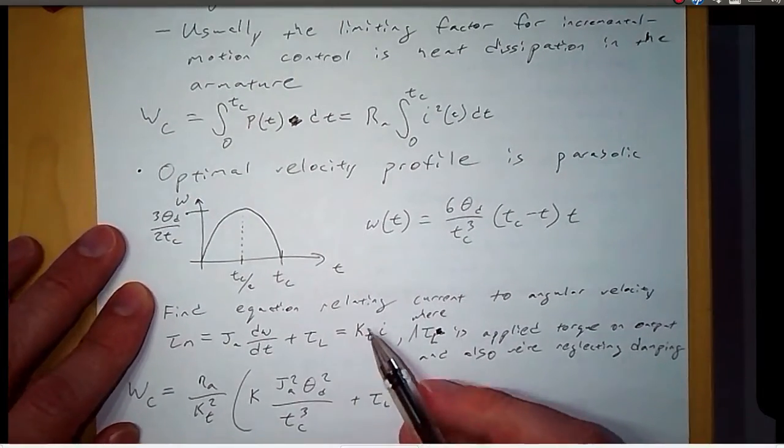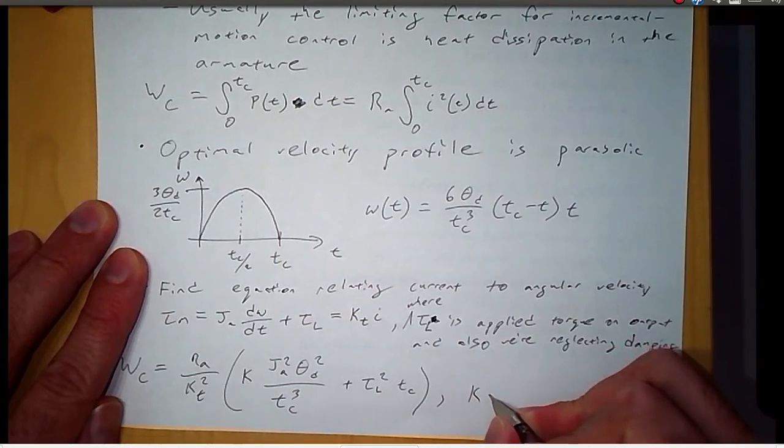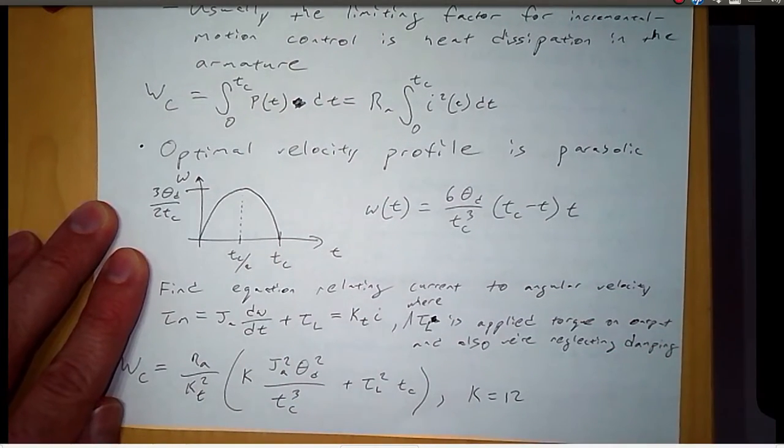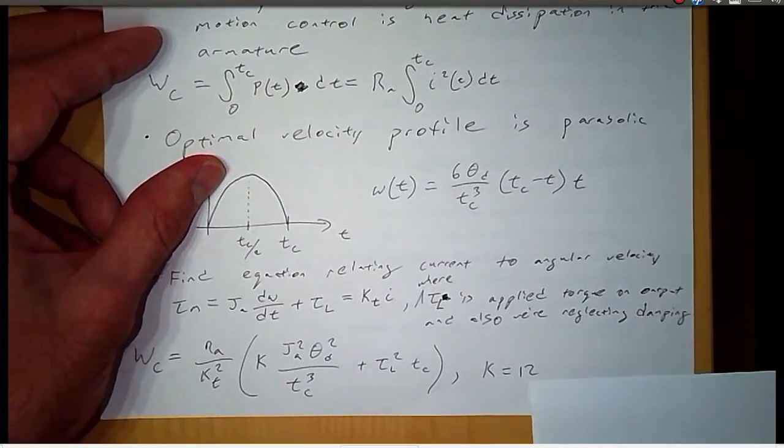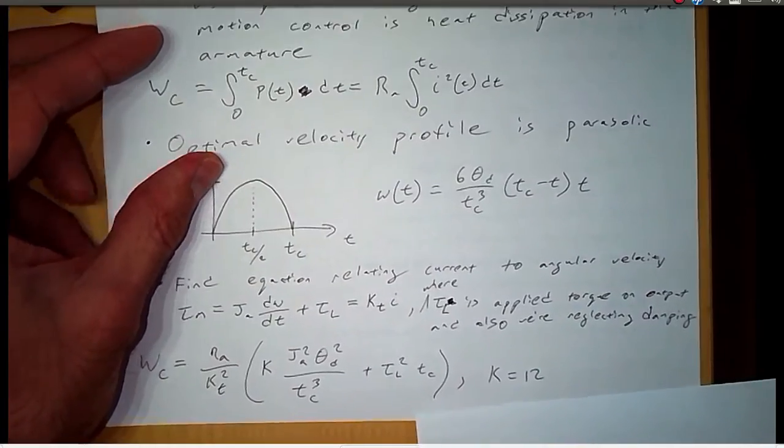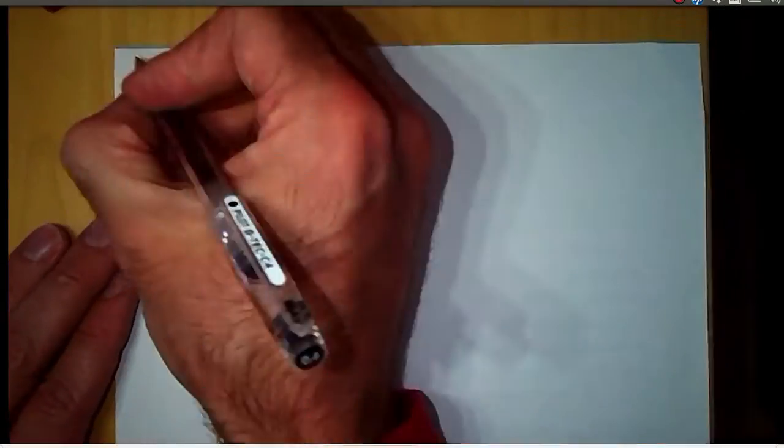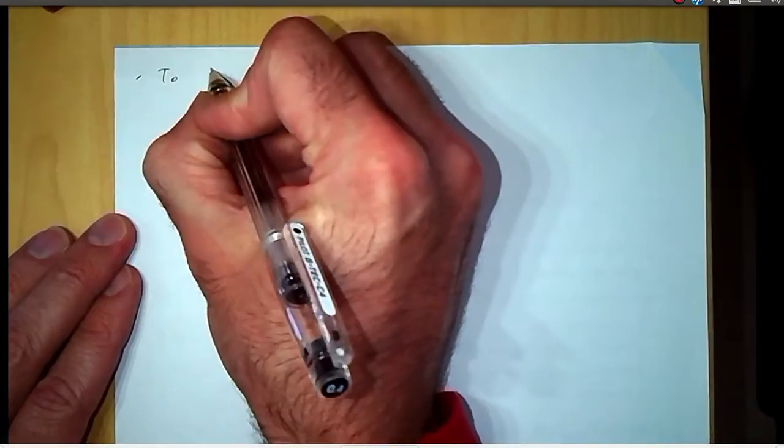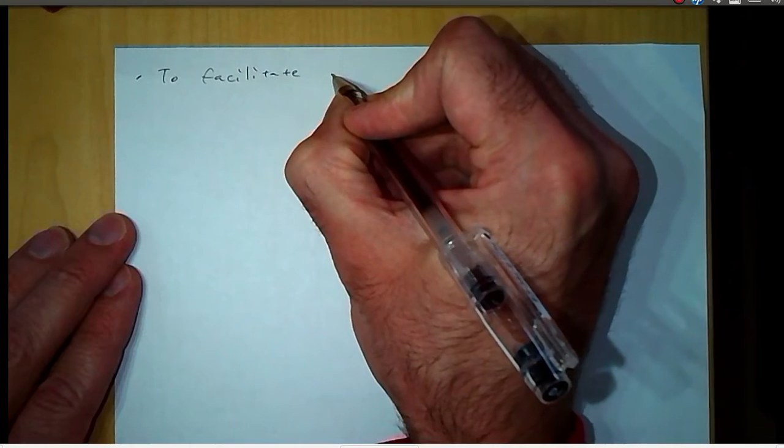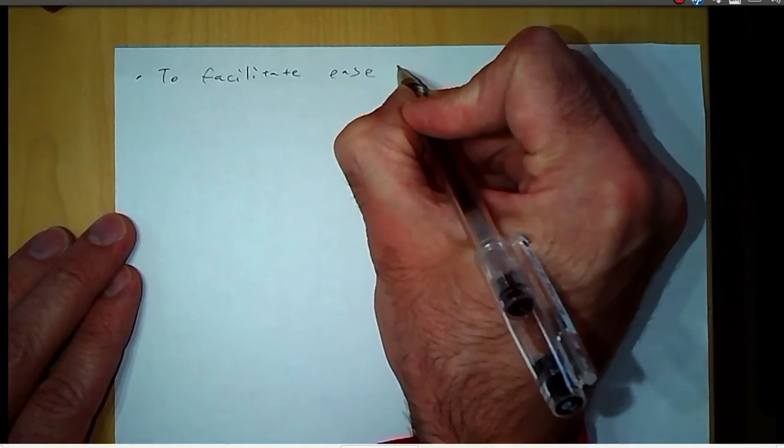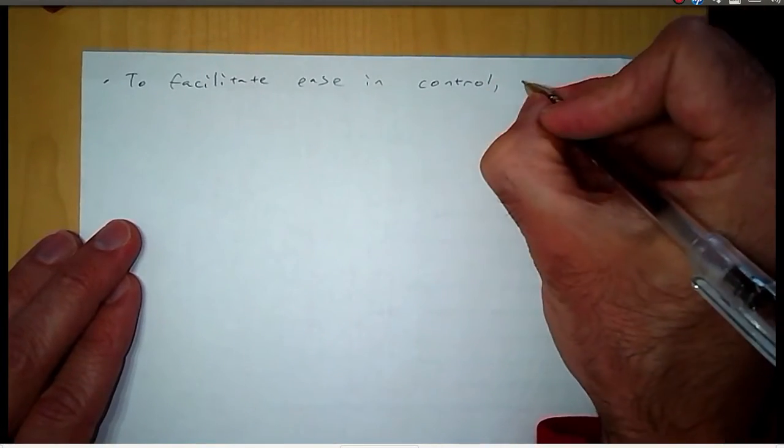Plus whatever load torque we have squared times the time. For the parabolic velocity profile, K is equal to 12. Now the reason we did that is we can compare this value K for different velocity profiles.